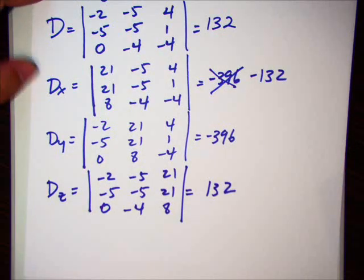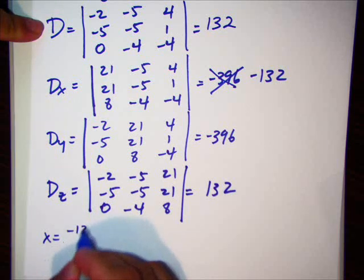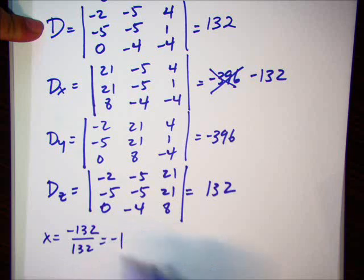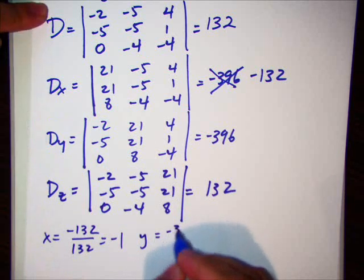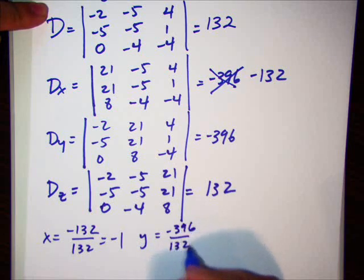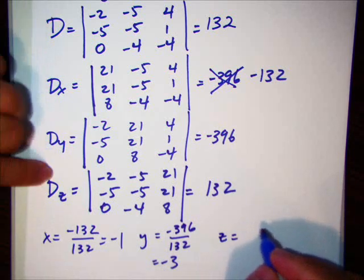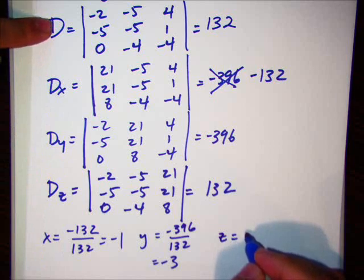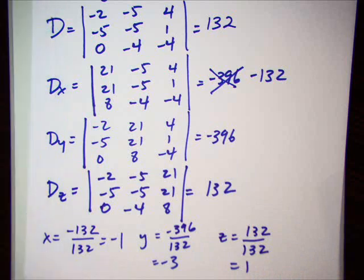Okay. Now that we have all the determinants, we can solve for each one. x is dx over d. So, it's negative 132 over positive 132. Making it negative 1. y is dy over d. So, it's negative 396 over 132. Making it negative 3. And z is dz over d. So, it's 132 over 132. Which is 1. That's it. So, final answer. Negative 1. Negative 3. 1.